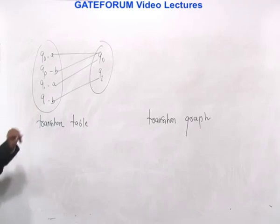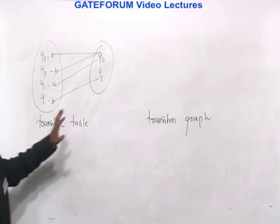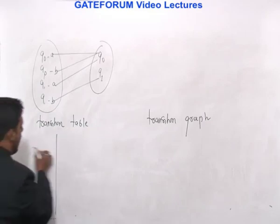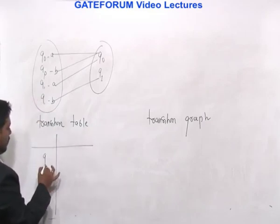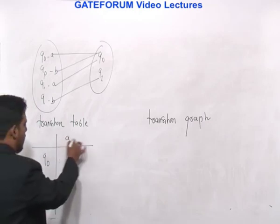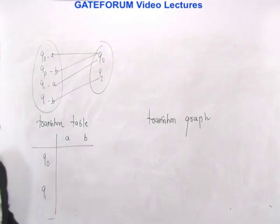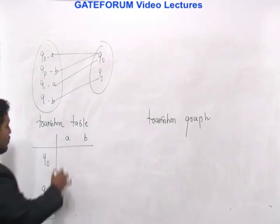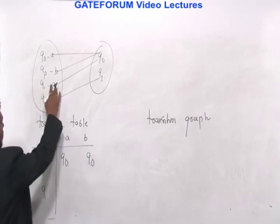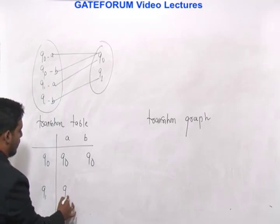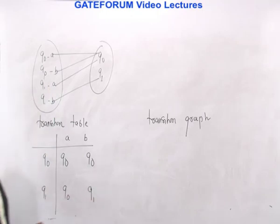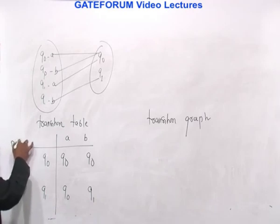This will be translated to a transition table and also to a transition graph. The transition table for states Q0 and Q1 with inputs A and B looks like this: Q0 on input A → Q0; Q0 on input B → Q0; Q1 on input A → Q0; Q1 on input B → Q1. This is how the DFA table looks.